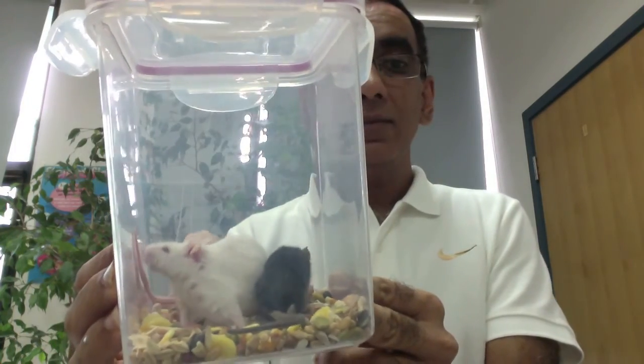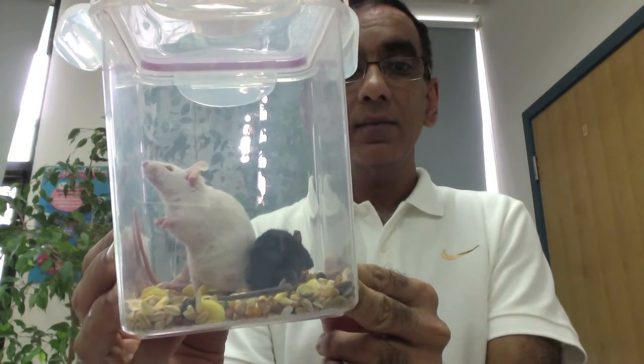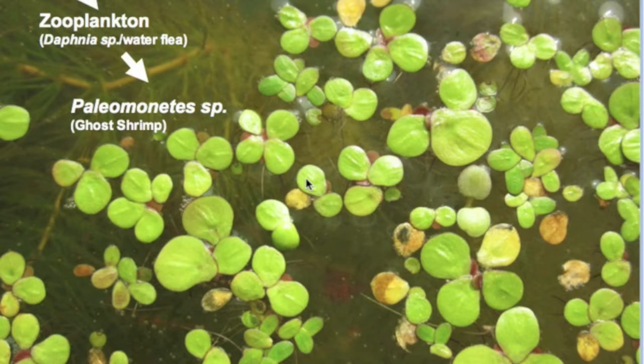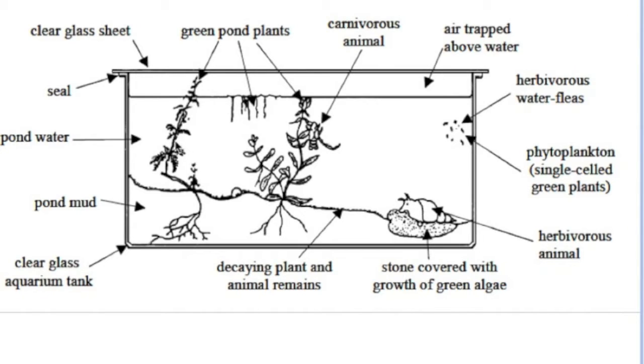A biologist wanted a closed system mesocosm like this one to include a range of autotrophs or producers, some first level consumers like daphnia, and a few second level consumers.